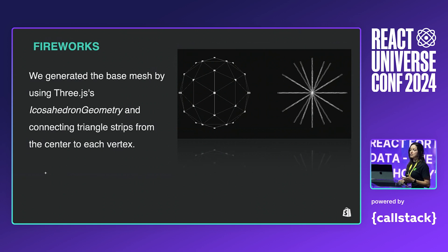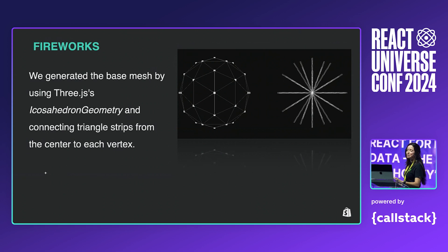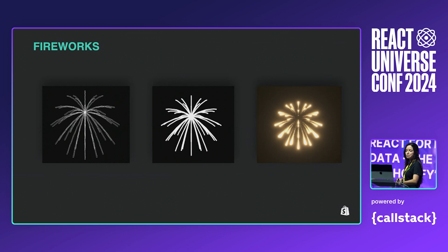Another feature we had was the fireworks — personally one of my favorites. We wanted to use them to celebrate the first sales of our merchants. Similar to our arcs, we wanted to see if all the fireworks could be done in a single draw call to facilitate rendering performance. We generated the base mesh using Three.js's geometry function — which is also unpronounceable — connecting triangle strips from center to each vertex. Then we gradually lowered the vertices along each of the trails to simulate gravity. We used UV coordinates on each trail the same way we did with the arcs, with V starting at zero going all the way to one. Finally, to give it the blurry touch at the end, we used a noise effect also provided by the library in Three.js.